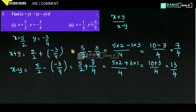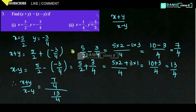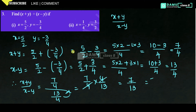So 5 into 2 plus 3 into 1, that is 10 plus 3 by 4, that is 13 by 4. Therefore x plus y by x minus y equals 7 by 4 divided by 13 by 4. That equals 7 by 4 into 4 by 13. The 4s cancel, giving 7 by 13 as the answer.